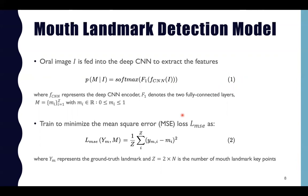The mouth landmark detection model is trained to minimize the mean squared error loss, as shown in Equation 2, where ym is the ground truth of the landmarks and k is the number of mouth landmark key points.